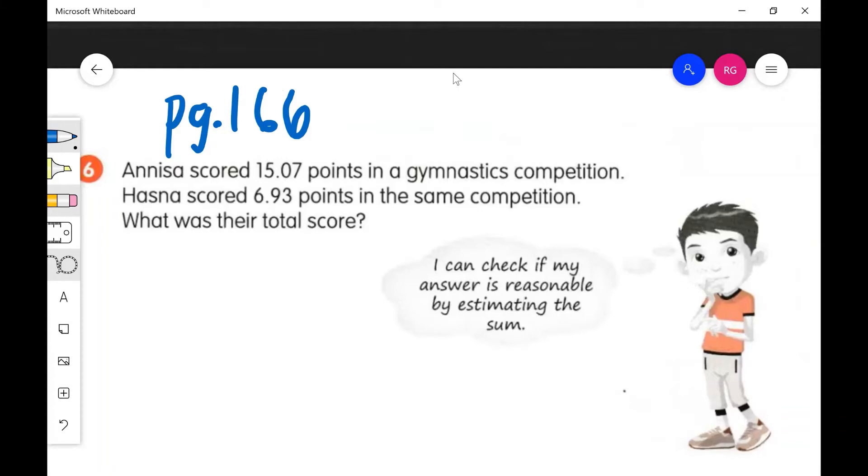Really the key here is just this keyword you could circle or highlight. What is their total score - what should we do here guys? Plus, yeah. 15.07 plus 6.93. I could almost recognize that right away and do this in my head.